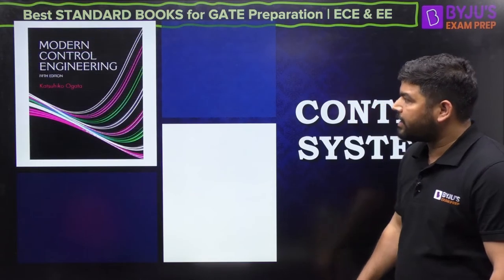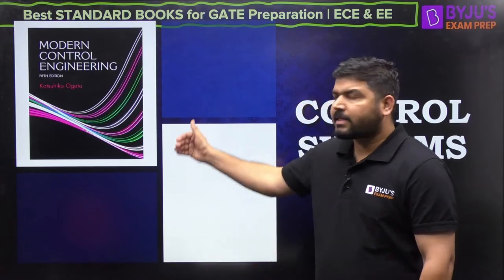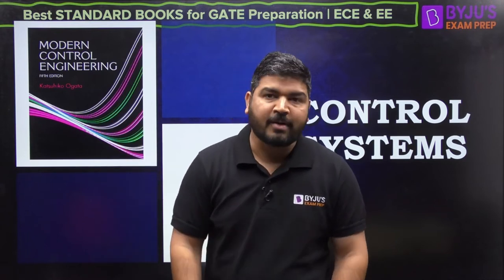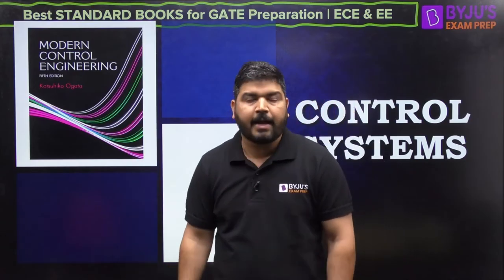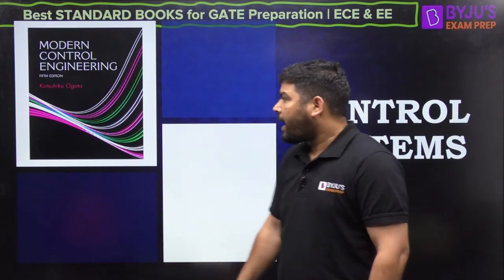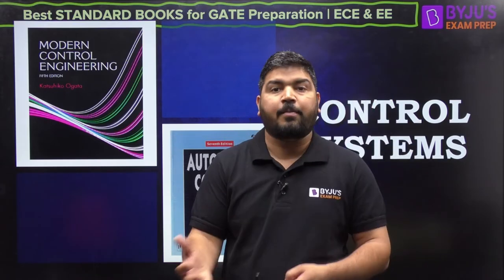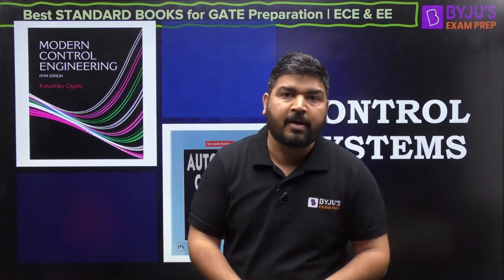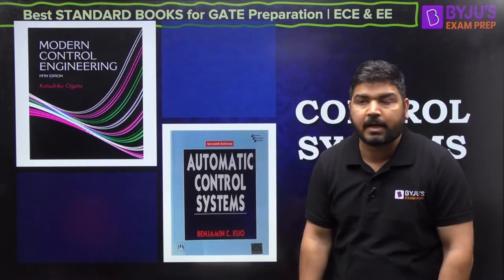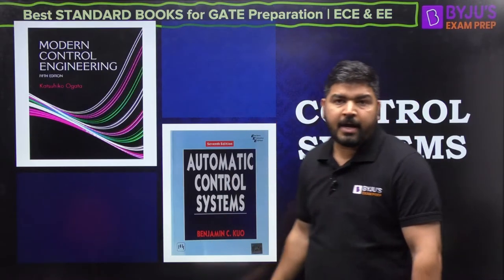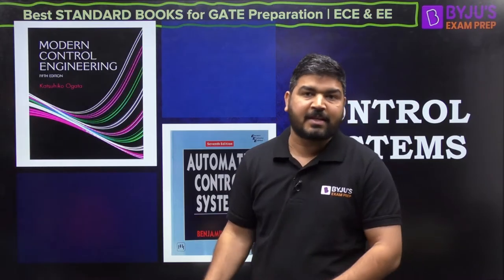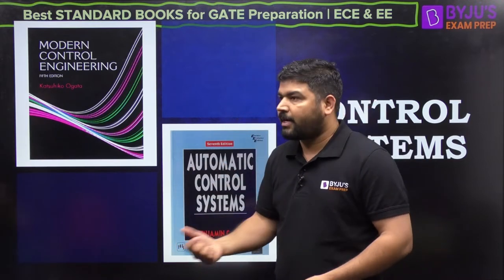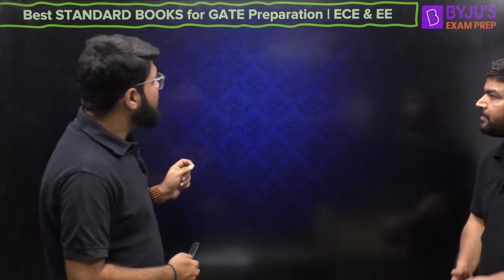Next subject is Control Systems. The first book for Control Systems is Ogata. Its language is quite simple and has very good concepts. If you refer to the Ogata book, you will really enjoy reading Control Systems because of the way it is written. If you need more command over concepts — for topics like Nyquist plot, minimum/non-minimum phase systems, or error analysis — then BCQO is also a very good book. Keep it with you for reference whenever there is confusion.